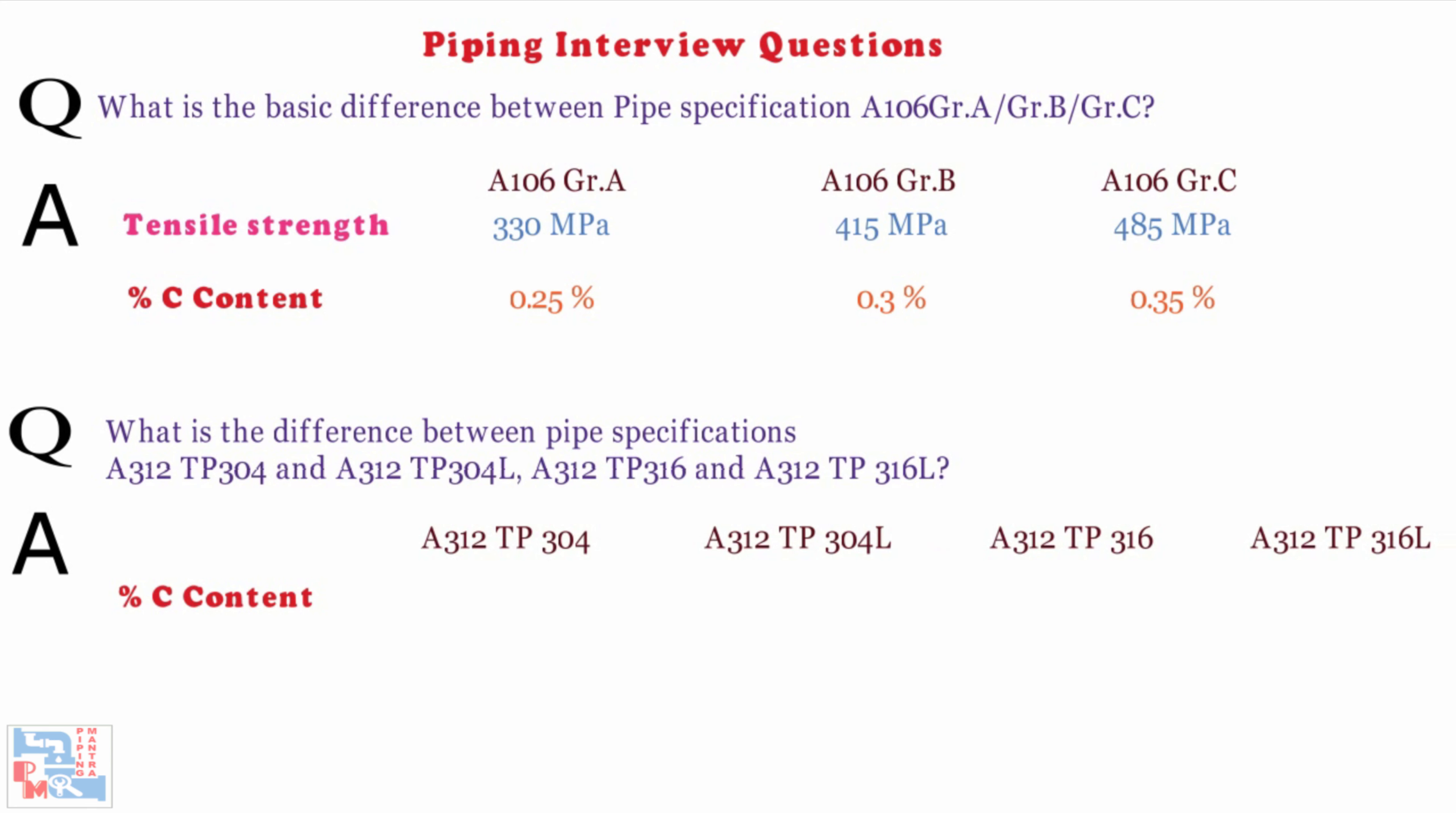The percentage of carbon content in A312 TP 304 is 0.08%, A312 TP 304L has 0.035% of carbon content. A312 TP 316 has 0.08% carbon content, A312 TP 316L has 0.035% of carbon content.